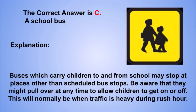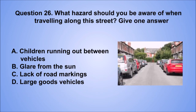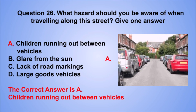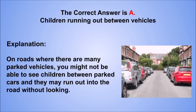Question 26. What hazard should you be aware of when traveling along this street? Give one answer. A. Children running out between vehicles. B. Glare from the sun. C. Lack of road markings. D. Large goods vehicles. The correct answer is A, children running out between vehicles. On roads where there are many parked vehicles, you might not be able to see children between parked cars and they may run out into the road without looking.